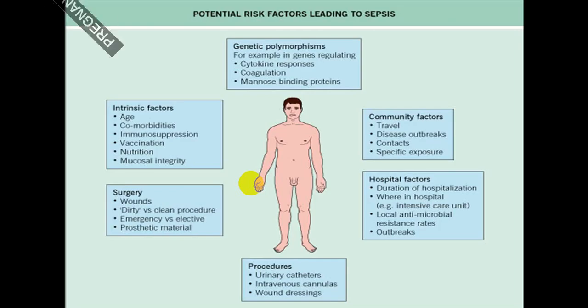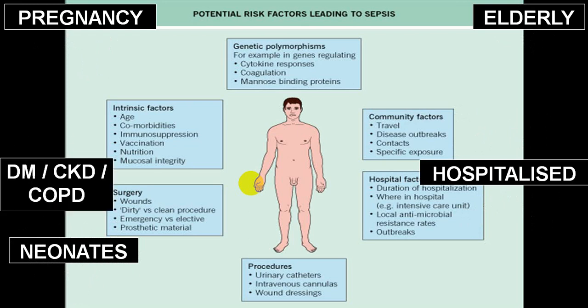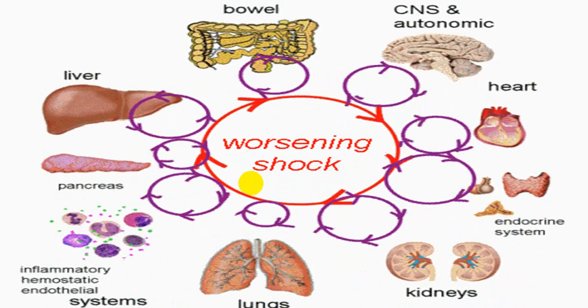There are many potential risk factors: pregnancy, neonates, hospitalized patients, elderly patients, diabetes, CKD, COPD. There are intrinsic factors, genetic factors, community factors, hospitalization factors, and certain procedures like urinary catheter, intravenous cannulas, wounds, etc. All can result in multi-organ dysfunction because of septic shock.